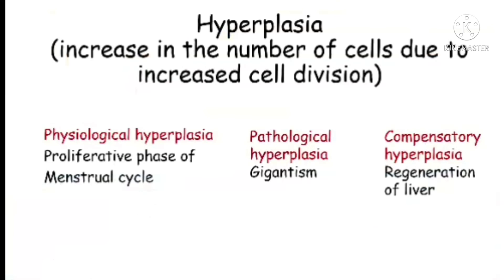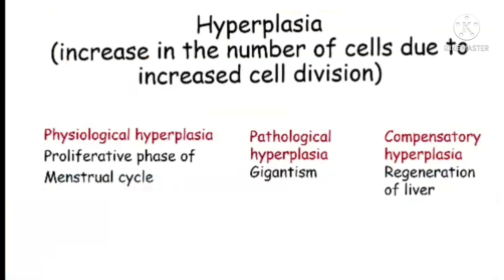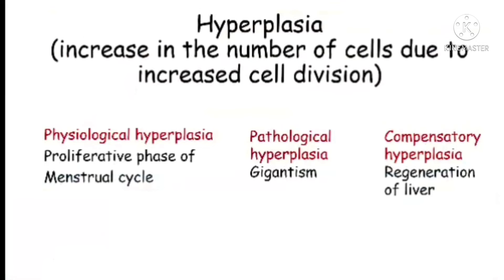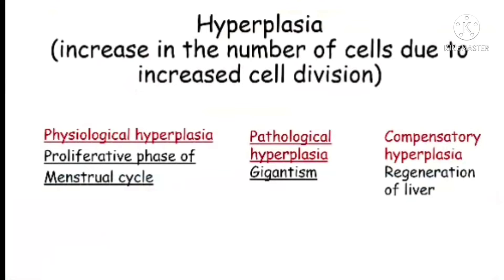Hyperplasia is an increase in the number of cells due to increased cell division, called mitosis. It has three types. The first is physiological hyperplasia, which is an increase in the number of cells because of physiological changes. The best example of physiological hyperplasia is the proliferative phase of the menstrual cycle.